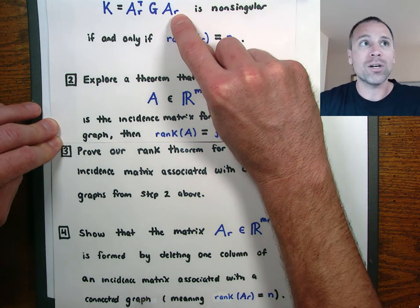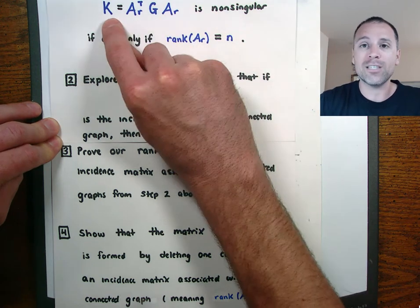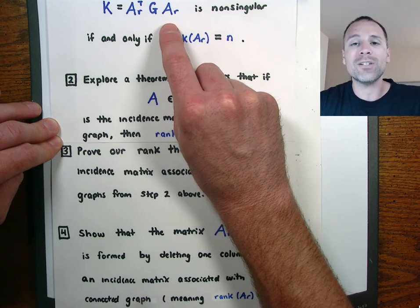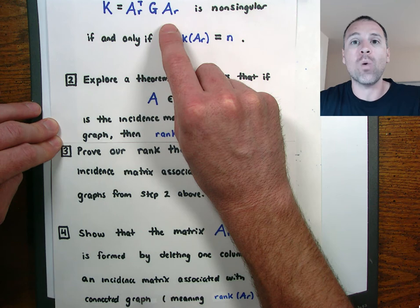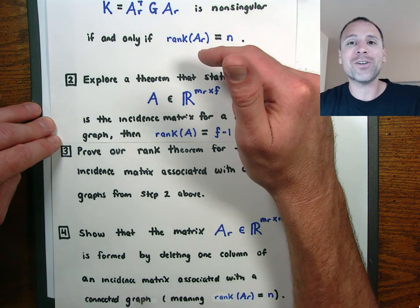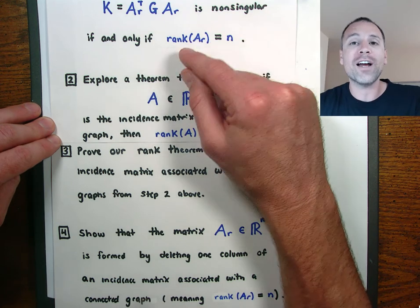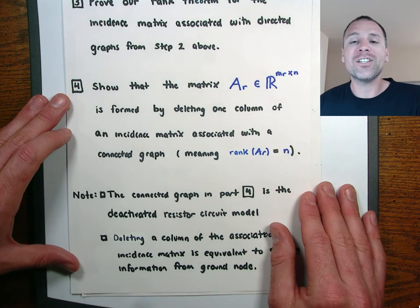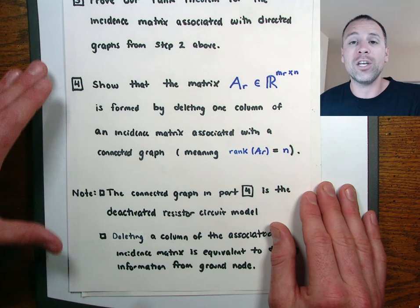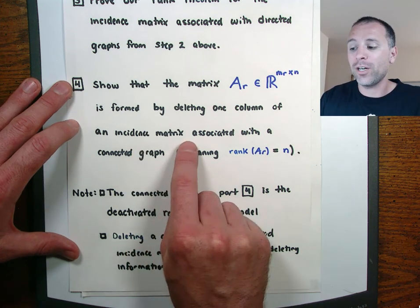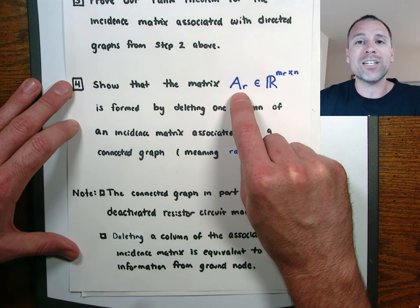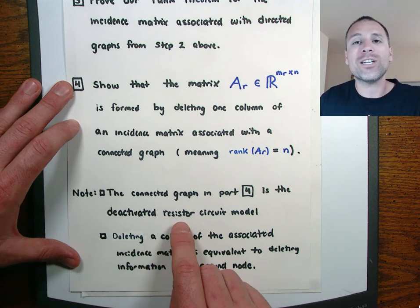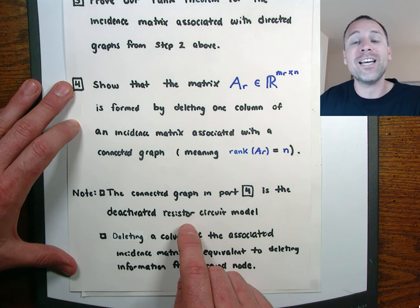Putting it all together: A sub R has full column rank, which means K is non-singular, which means the linear system from the LANA algorithm always has a unique solution. This means for the class of circuits analyzed using the LANA algorithm we will always find a unique solution — this is a general approach to circuit analysis. The incidence matrix used to generate A sub R is the incidence matrix from the deactivated resistor circuit discussed in the step 6 extension videos.